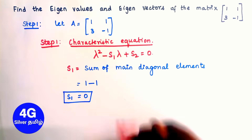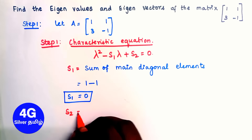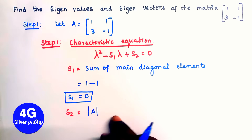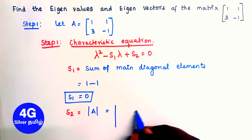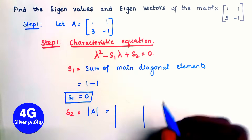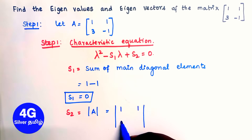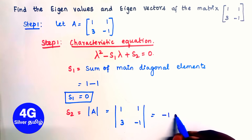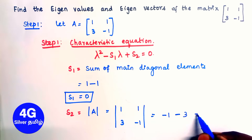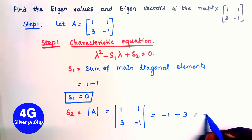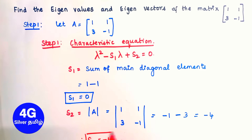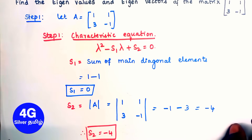Next, S2 is the determinant of matrix A. Matrix A is [1, 1; 3, -1]. The determinant is (1)(-1) minus (1)(3), which is -1 minus 3, giving minus 4. Therefore S2 equals -4.